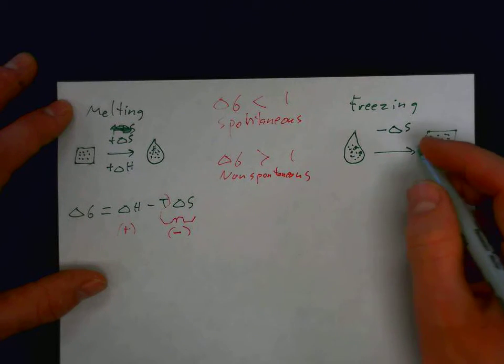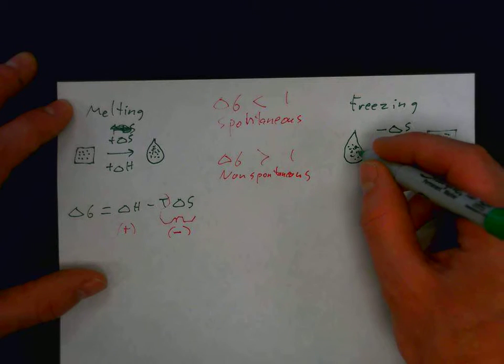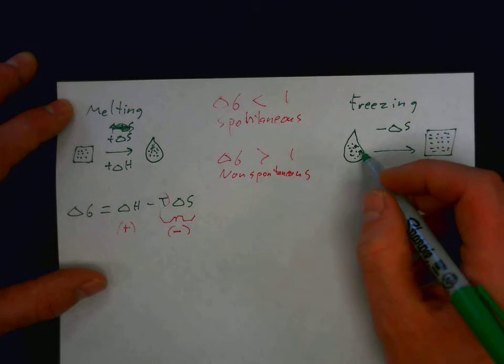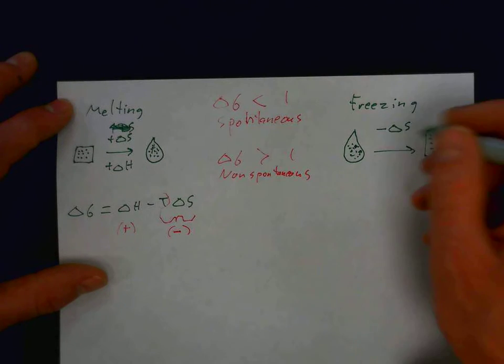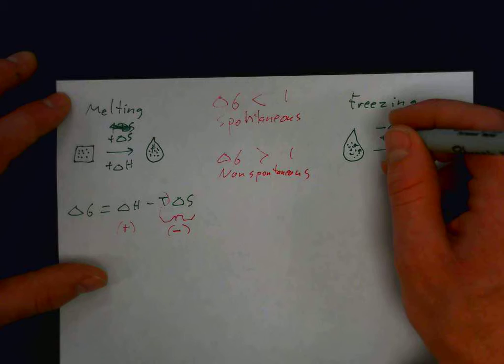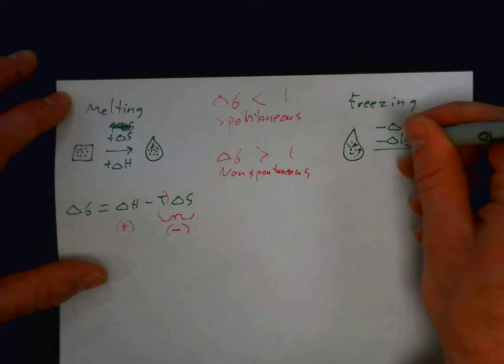Now, the enthalpy, delta H, as we go from liquid to solid, we have to remove heat as the ice freezes. So, that is exothermic as well. It's an exothermic process. So, delta H is also negative.